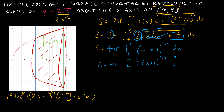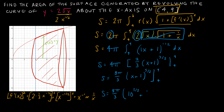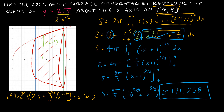Pulling the 2/3 out gives 8π/3 times (x+1)^(3/2) evaluated from 4 to 9. Plugging in: (9+1)^(3/2) = 10^(3/2), and (4+1)^(3/2) = 5^(3/2). Since there's no perfect square root of 10, I'll use a calculator, and you should get approximately 171.258 as your solution.